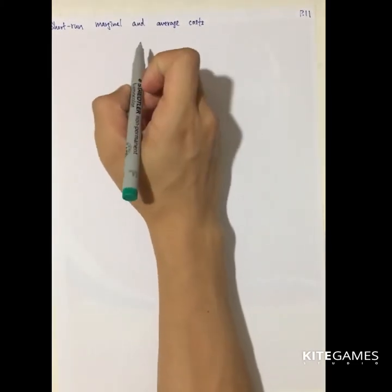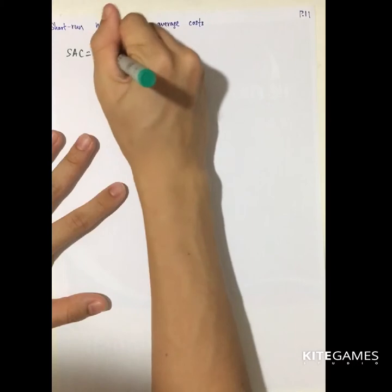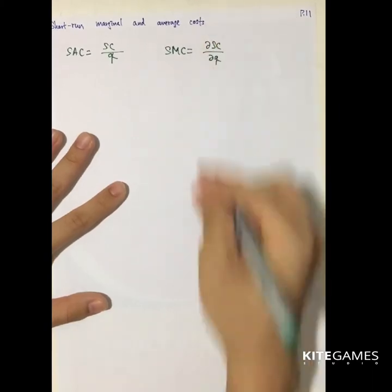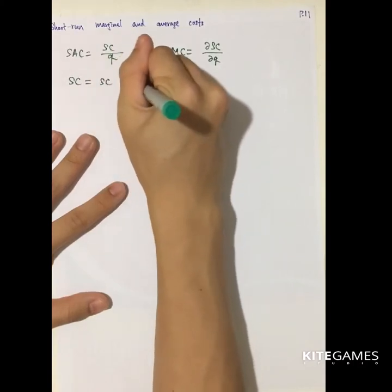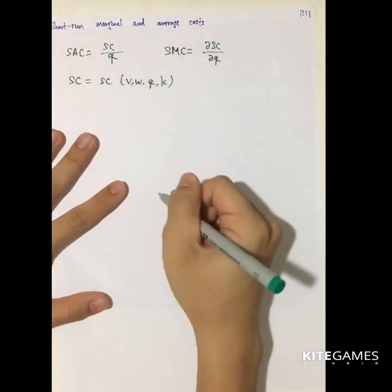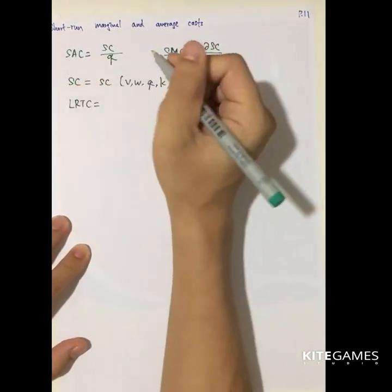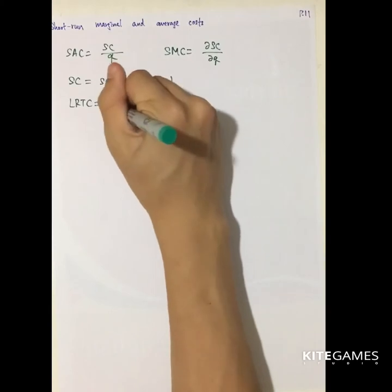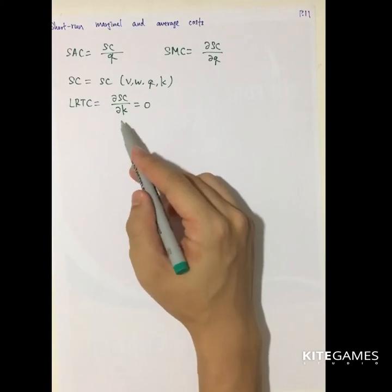Before discussing how to move from the short run to the long run, let's define two concepts. The short-run average cost is the short-run total cost divided by Q. The short-run marginal cost is partial SC partial Q. The short-run total cost is a function of V, W, Q, and K. To transform the short-run total cost into the long-run total cost, you allow capital to move and select the capital that minimizes the short-run total cost.